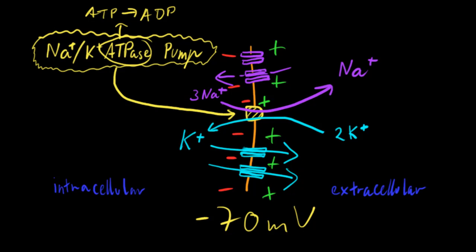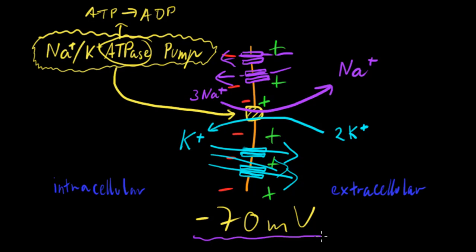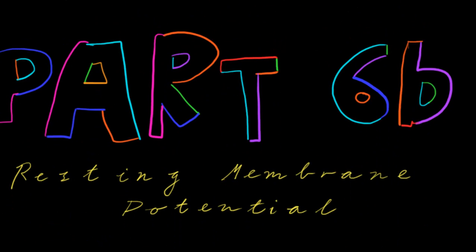But it doesn't just stay this way. The potassium ions continue to leak out and the sodium ions continue to leak in. This means the sodium-potassium ATPase pump has to keep on working — it has to keep using energy to maintain a dynamic constancy, maintaining that negative 70 millivolts. I hope this has been interesting or helpful. This has been Part 6b, Resting Membrane Potential.